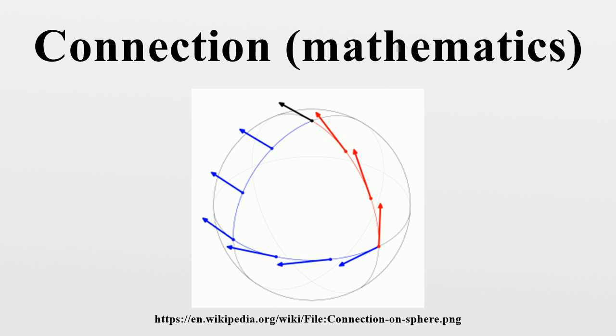An affine connection is typically given in the form of a covariant derivative, which gives a means for taking directional derivatives of vector fields, the infinitesimal transport of a vector field in a given direction.